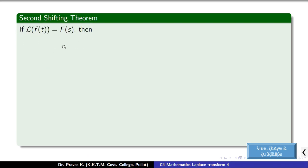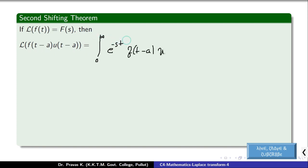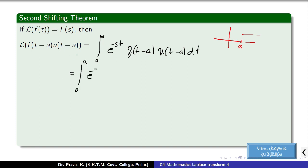Now let us consider the second shifting theorem. We calculate the Laplace transform of f(t-a) into u(t-a). The basic definition is integration from 0 to infinity of e raised to minus st into f(t-a) into u(t-a) dt. Since u(t-a) is 0 before a and 1 after a, we integrate from a to infinity.